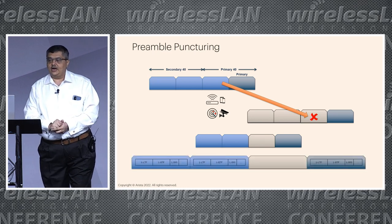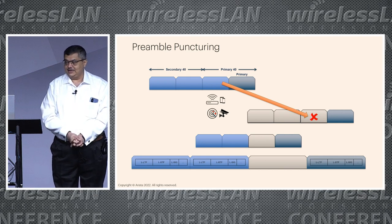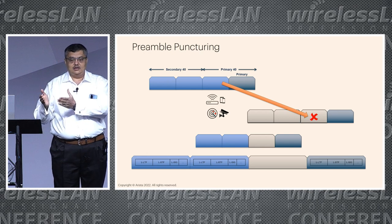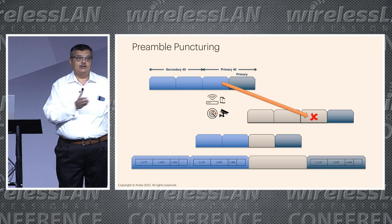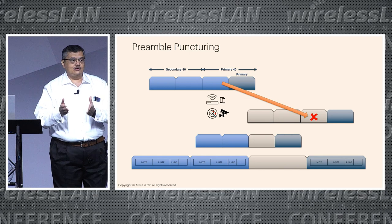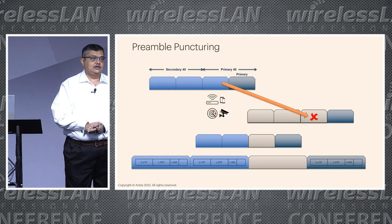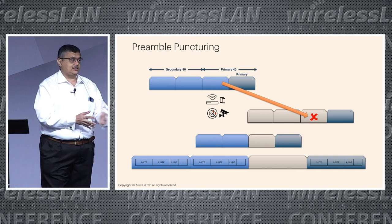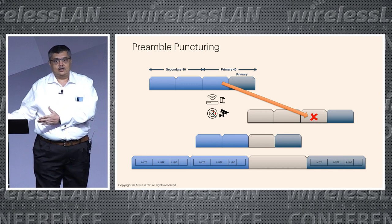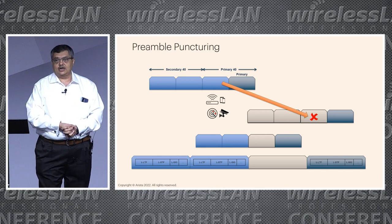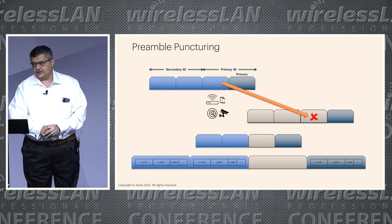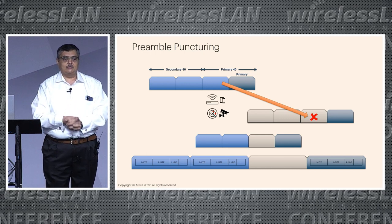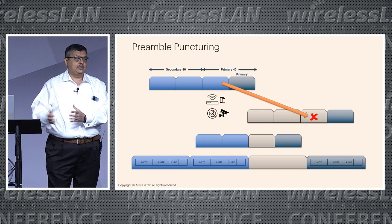The reason it's called preamble puncturing — and this was pretty amazing when somebody told me — is because you send the preamble of the PPDU in every 20MHz block. The fact that you're not sending the preamble in one of the blocks you're trying to puncture is why it's called preamble puncturing. All the other associated clients know they don't have to use this channel. That's why it's also effective in case of DFS — you as master control ensure nobody is transmitting in that DFS channel.